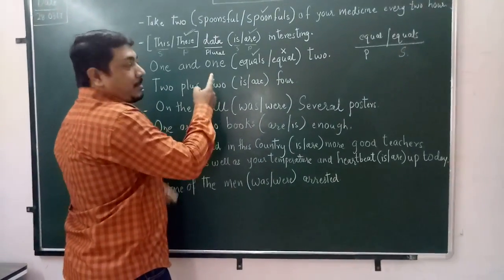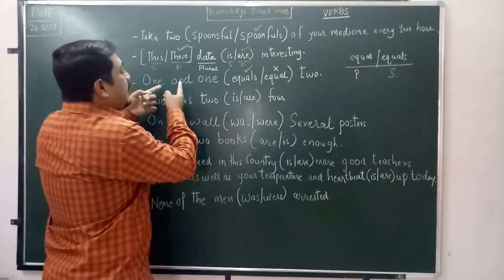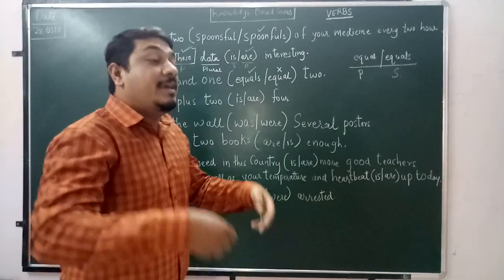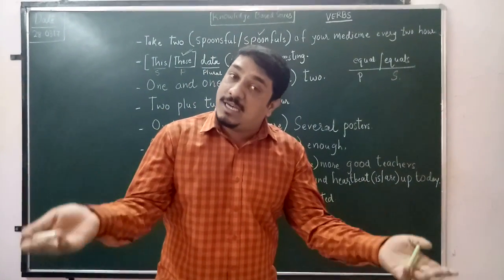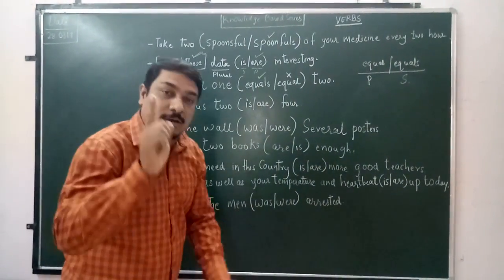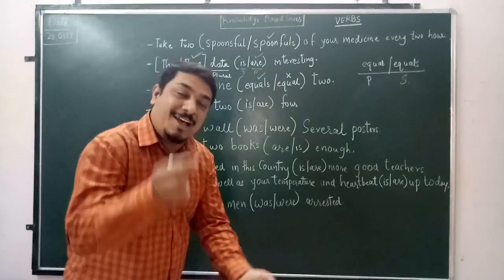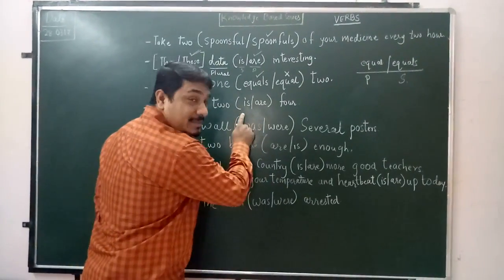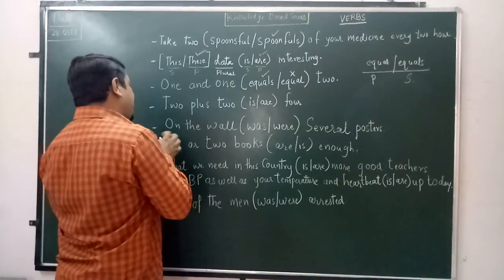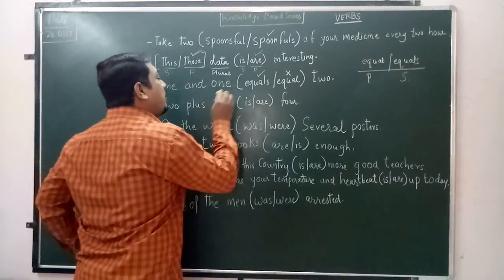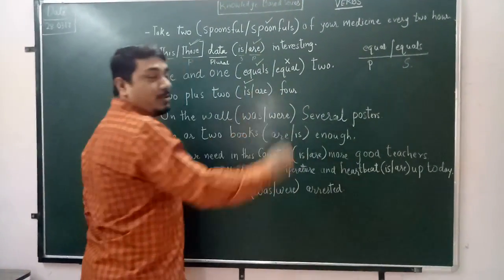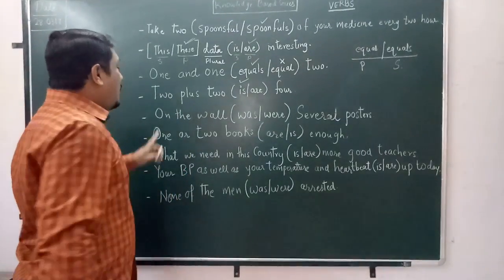Similarly, 'two plus two' — here also there is a number. Whether it is thousand, lakh, or crore, if a number is used, the verb will always be singular. So which singular verb from the options? 'Is'. Therefore: 'two plus two is four'. Right? Next.